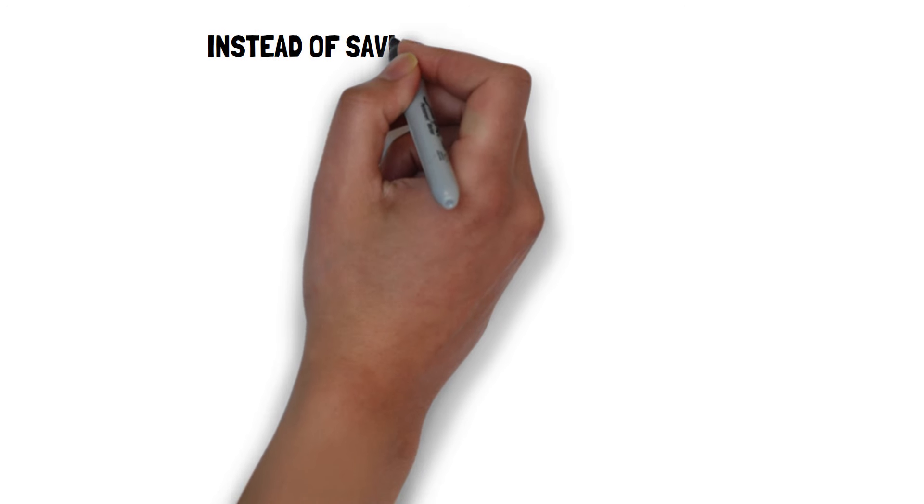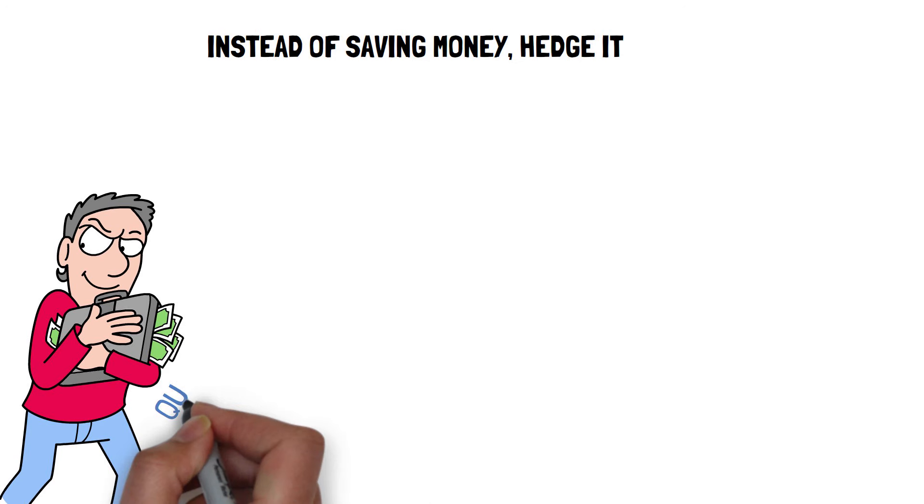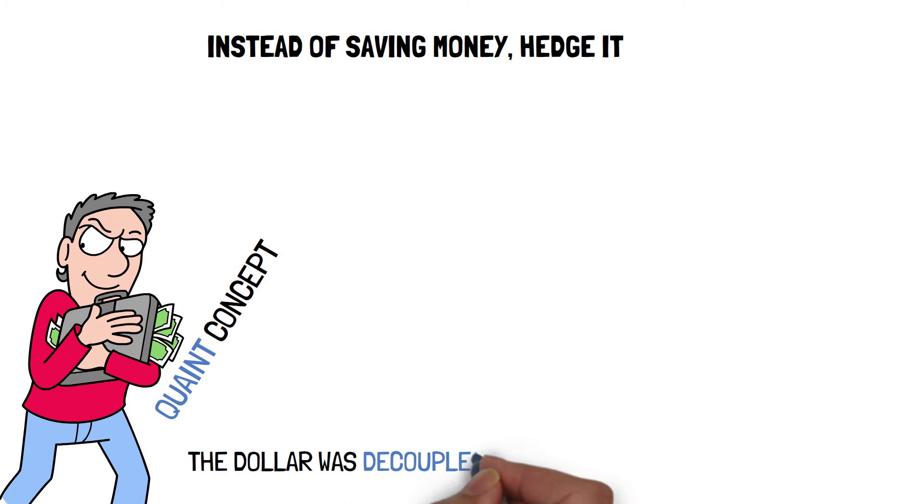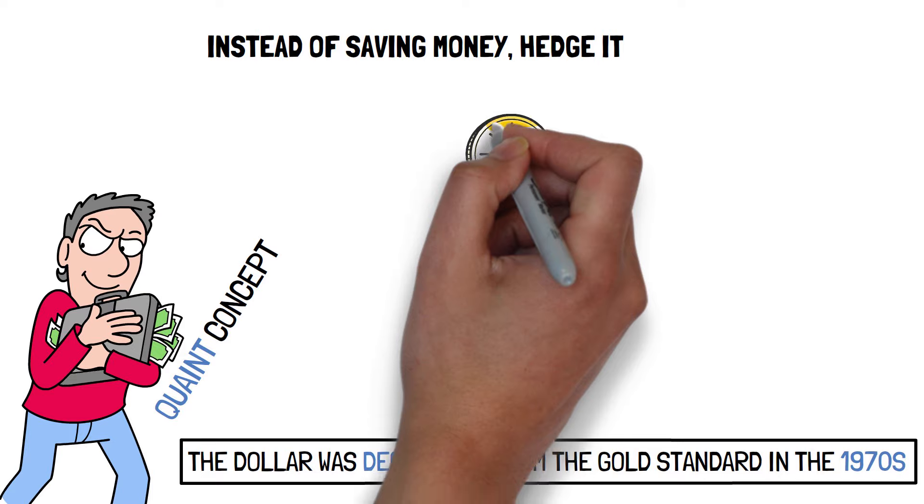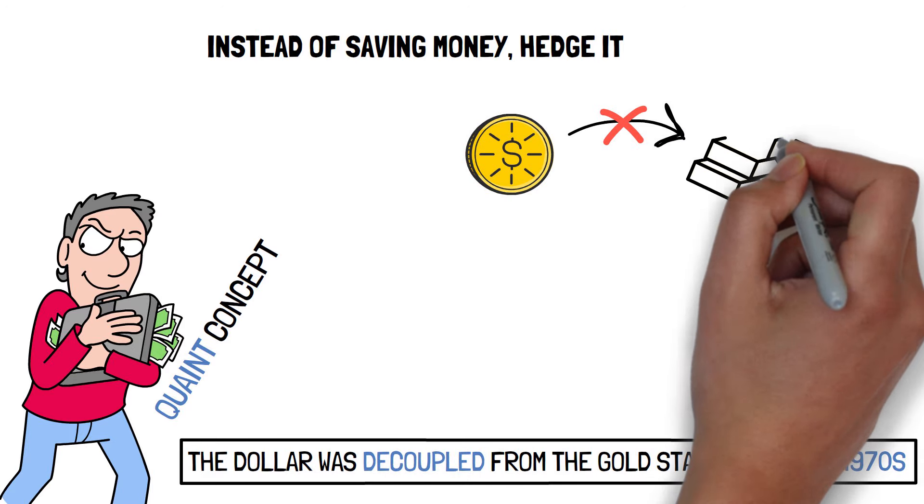Instead of saving money, hedge it. Saving money is a quaint concept that has been rendered obsolete since the dollar was decoupled from the gold standard in the 1970s. This meant that the dollar's worth no longer represented an actual amount of gold.